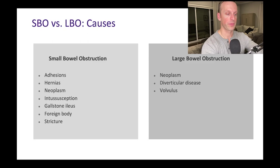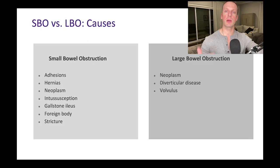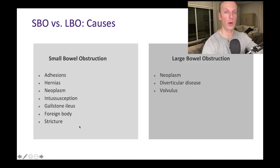For large bowel obstruction, the typical cause is neoplasm — that's number one. If somebody comes in with a large bowel obstruction, I'm thinking cancer. Then diverticular disease and volvulus. Diverticular disease usually manifests as a stricture; sometimes acute diverticulitis and perforation. Diverticular disease is actually the most common cause of colonic inflammation. Stricture is also an important cause of small bowel obstruction — think about what disease could cause stricturing of both large and small bowel.